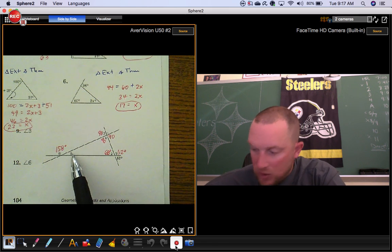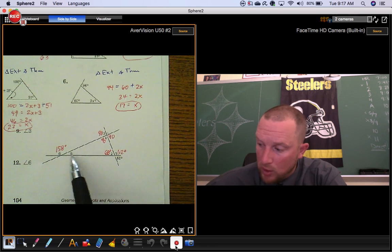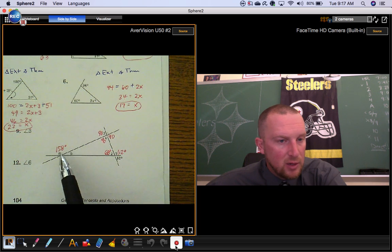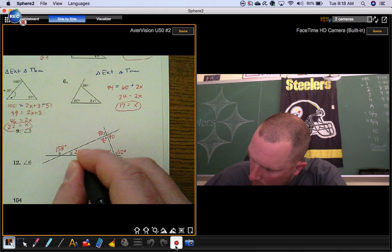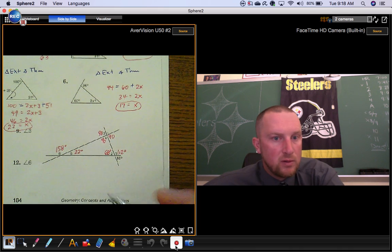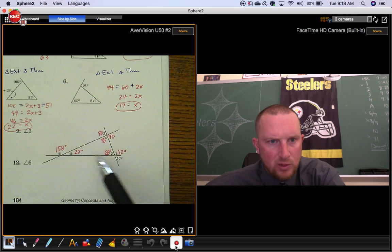Okay, now you could find the measure of angle 5 a bunch of different ways. Triangle angle sum theorem, you could figure out angle 5, or you got a linear pair right here. What makes a linear pair with 158? 22 degrees. What's 90 plus 68 plus 22? It's going to be that same 180.